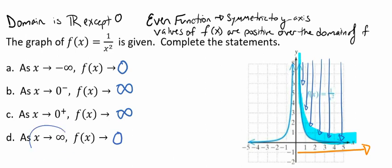So when I'm looking as x approaches infinity, I'm saying as I'm looking to the right from 0, what is happening? Are my numbers getting bigger or are my numbers getting smaller? And what number are they approaching? And that's how we look at what these statements are saying to us.